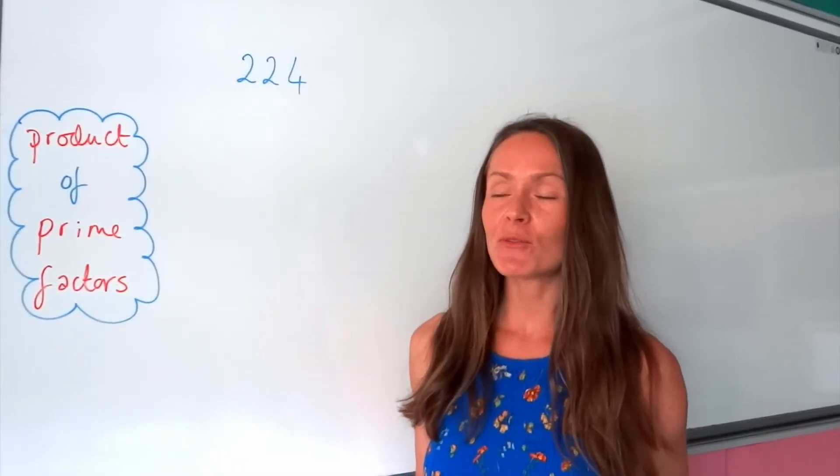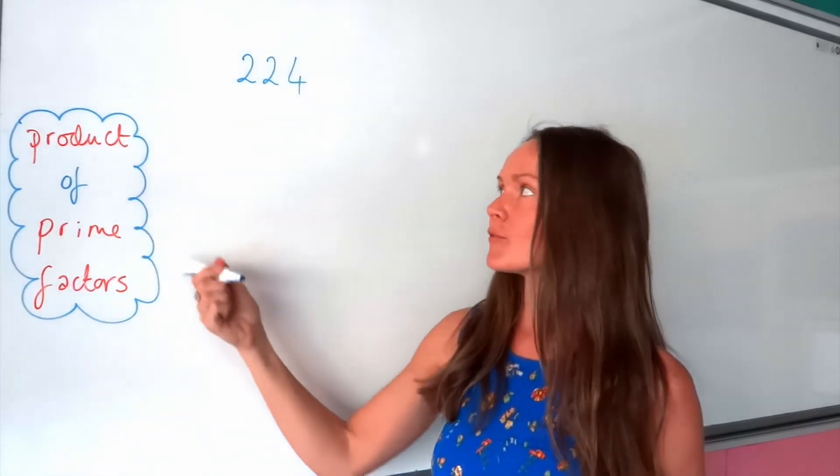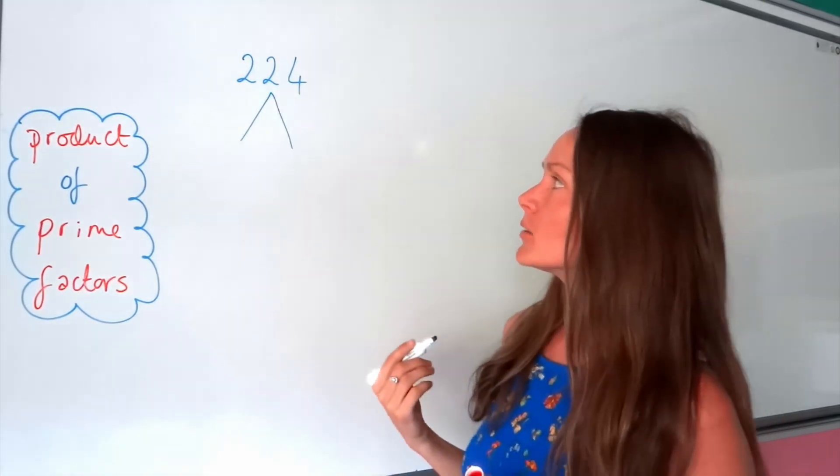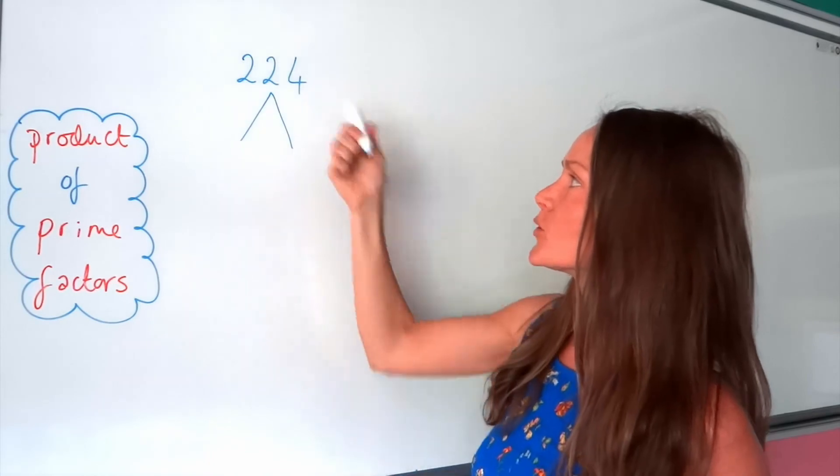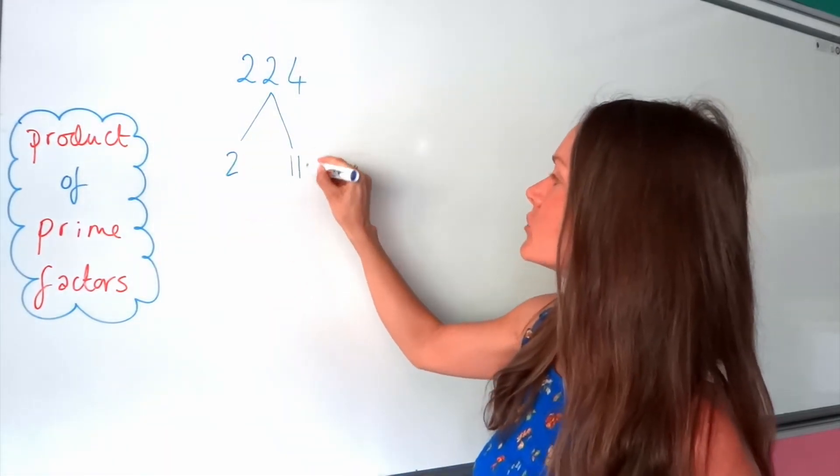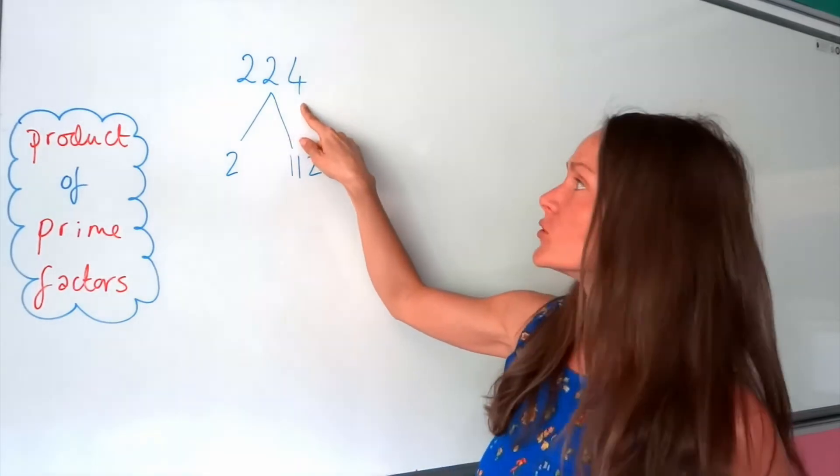Okay, so just like before, I'm going to draw my factor tree in order to locate the prime factors of this number here. So I'm going to start with my two branches. Well, two numbers that multiply to give 224 could be 2 and 112. So 2 times 112 gives me 224.